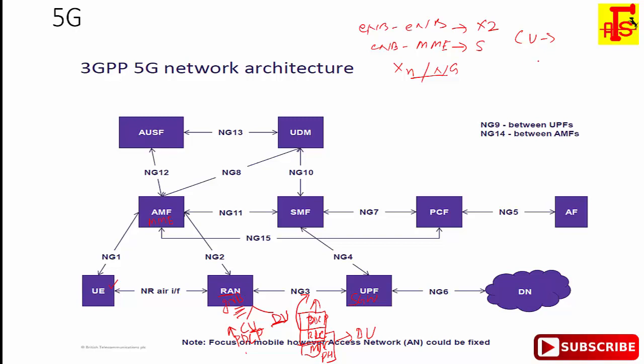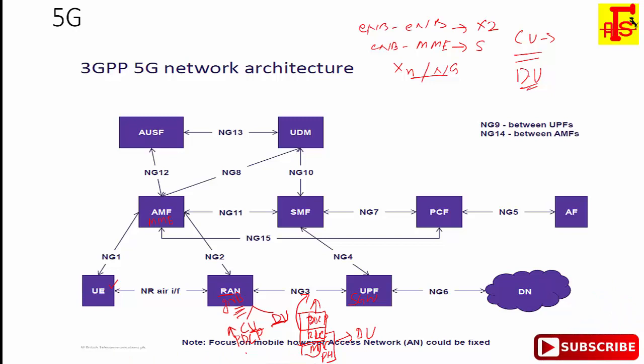The Distributed Unit is a logical node that includes a subset of the gNodeB functions, and its operations are controlled by the Central Unit. The CU controls the DU over the fronthaul interface — specifically the F1 interface — through which the Central Unit and Distributed Unit communicate.